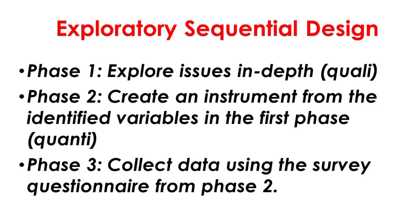In the exploratory sequential design, this design happens in three phases. First, the researcher explores an issue in depth through qualitative means. The second phase includes the creation of a quantitative instrument, such as a questionnaire, to identify and measure the variable and statistical trend. The third phase is the collection of quantitative data using the instrument created in phase two. For example, the researcher may conduct interviews to gather students' and teachers' views about different learning modalities in the new normal setup. After gathering common themes from these interviews, the researcher proceeds to creating the research instrument by identifying the variables in focus. The third phase is administering this instrument and then integrating the two sets of data to draw integrated conclusions.